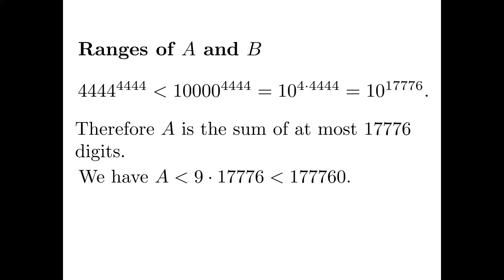So A is at most a 6-digit number. The first digit is at most 1, and the remaining 5 digits are at most 9. Therefore, B, as the sum of each digit, is less than 46.